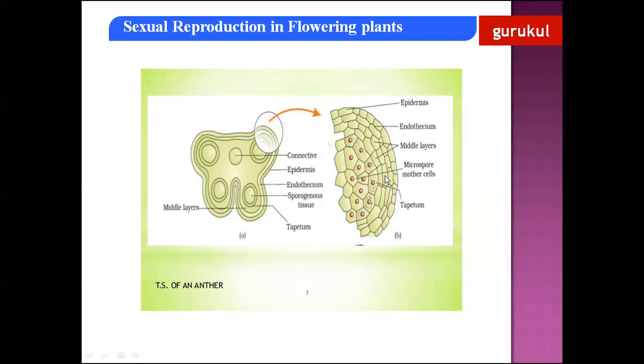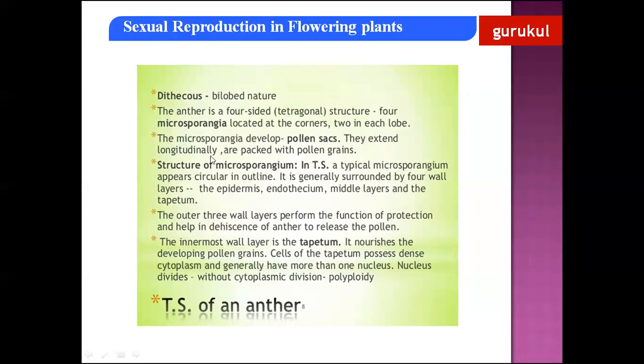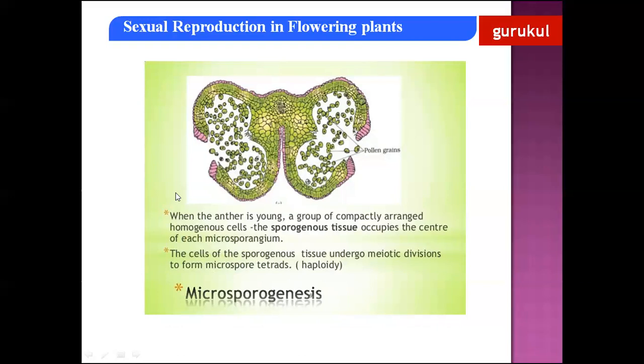When you take the transverse section of the anther it can even be asked in the form of a diagram. The tapetum nourishes the developing pollen grains. The cells of the tapetum possess dense cytoplasm and generally have more than one nucleus. The nucleus divides without cytoplasmic division, so the tapetum is said to be polyploid. These are the four layers of the anther: epidermis, endothecium, middle layer, and tapetum.